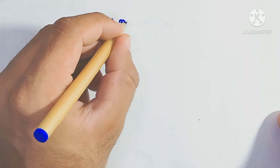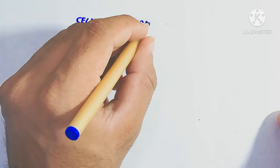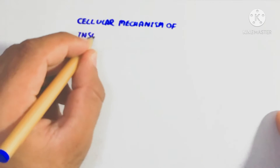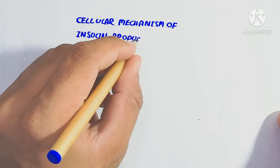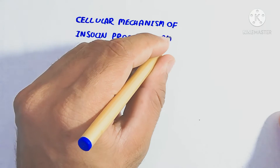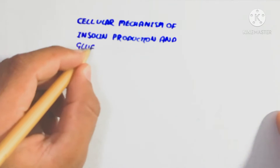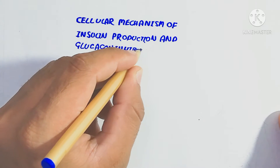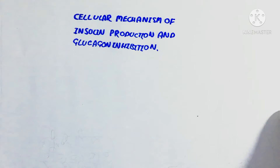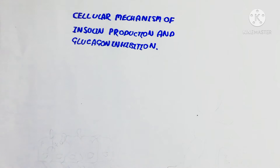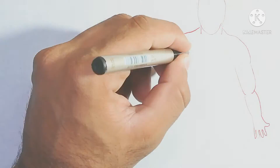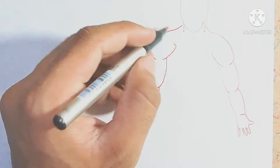Here we will discuss the cellular mechanism of insulin production and glucagon inhibition. Insulin is produced in response to sugar, which is the hyperglycemic effect in the blood. Insulin promotes absorption of sugar into the tissue, while glucagon inhibition stops the production of glucose from glycogen in muscle as well as liver.